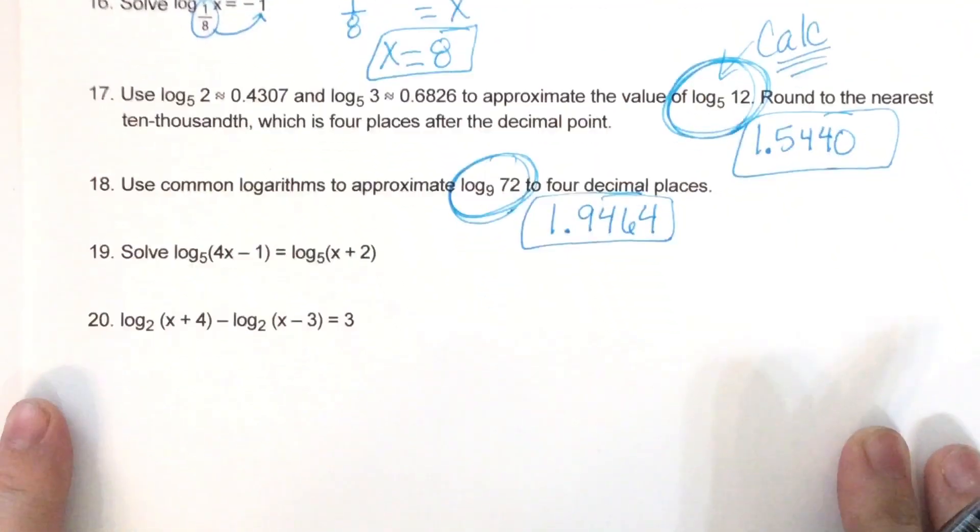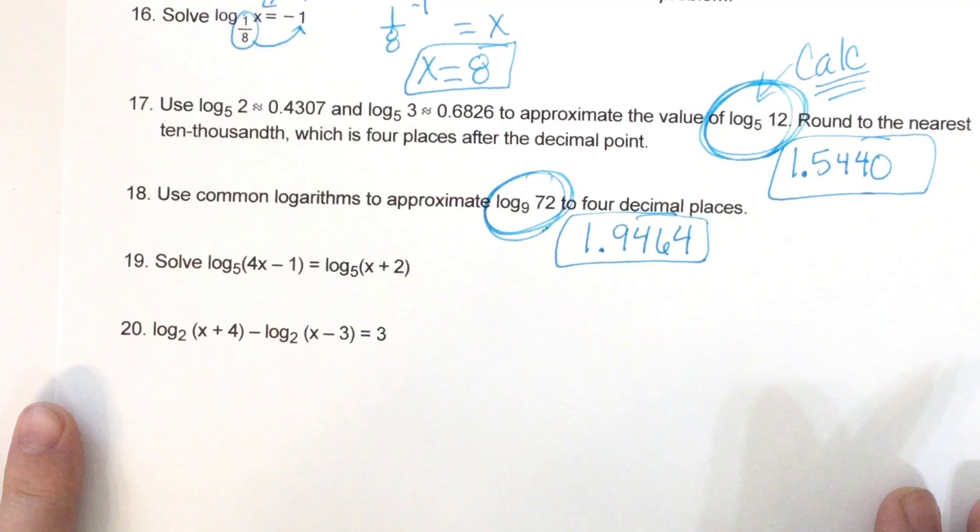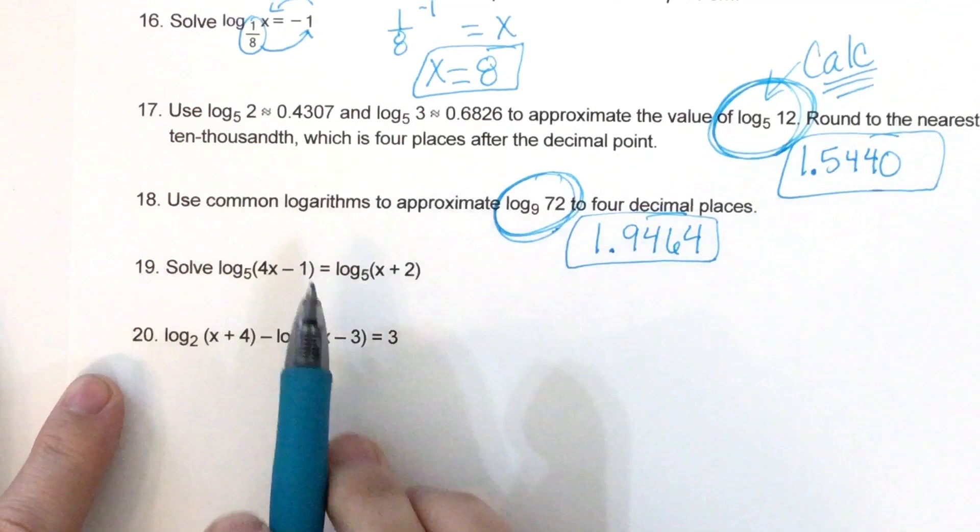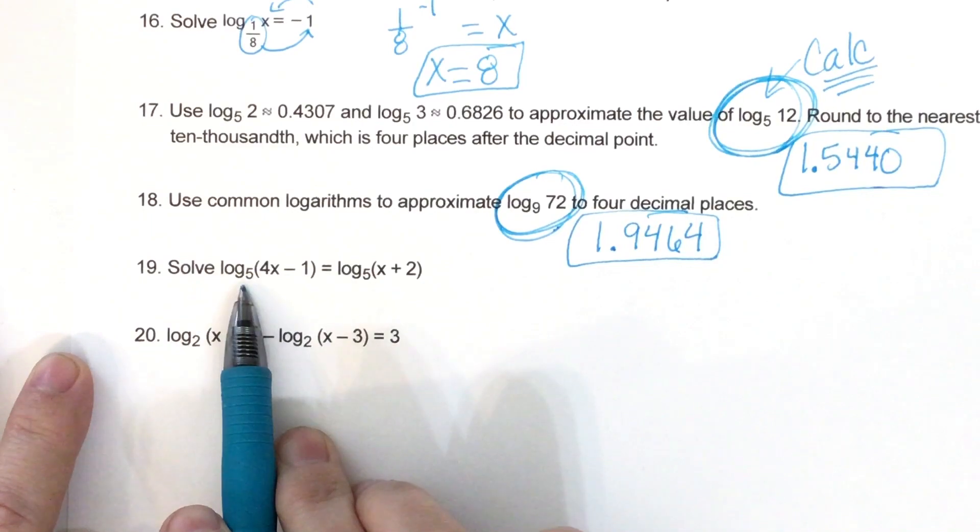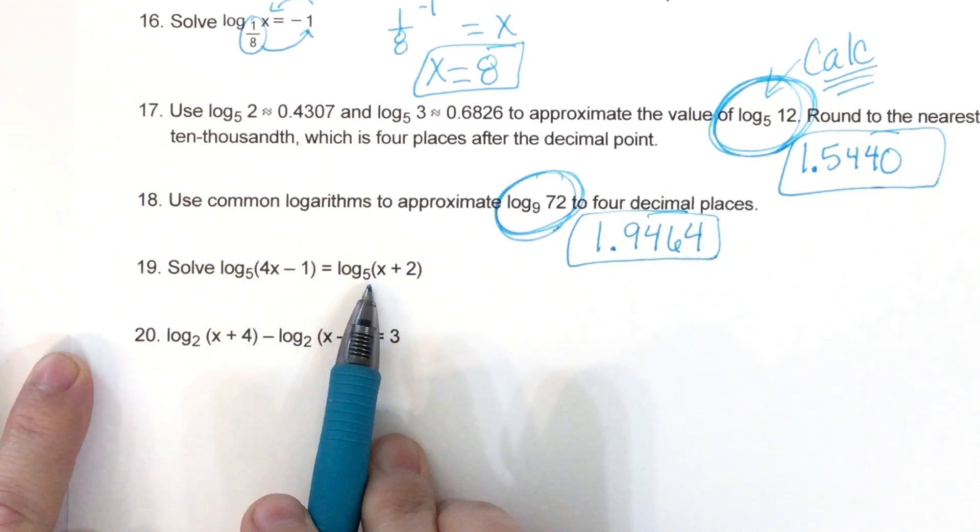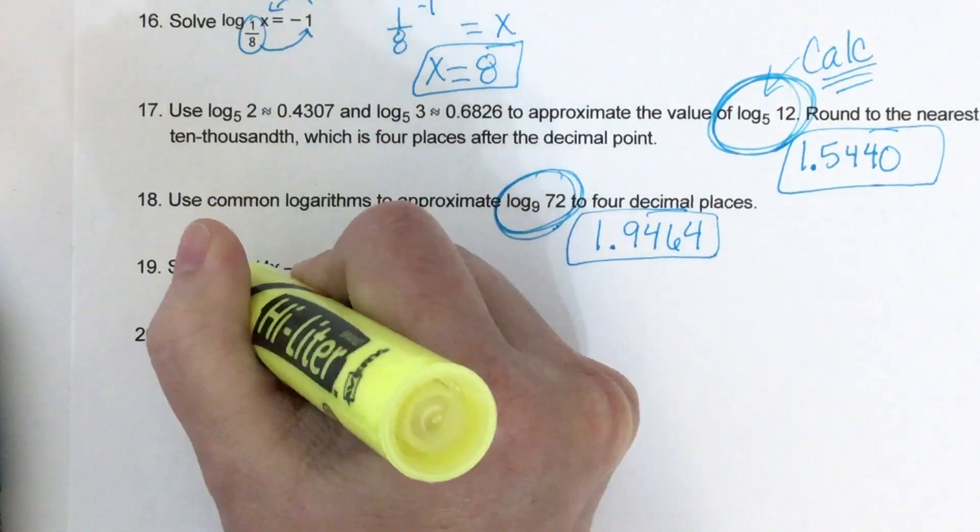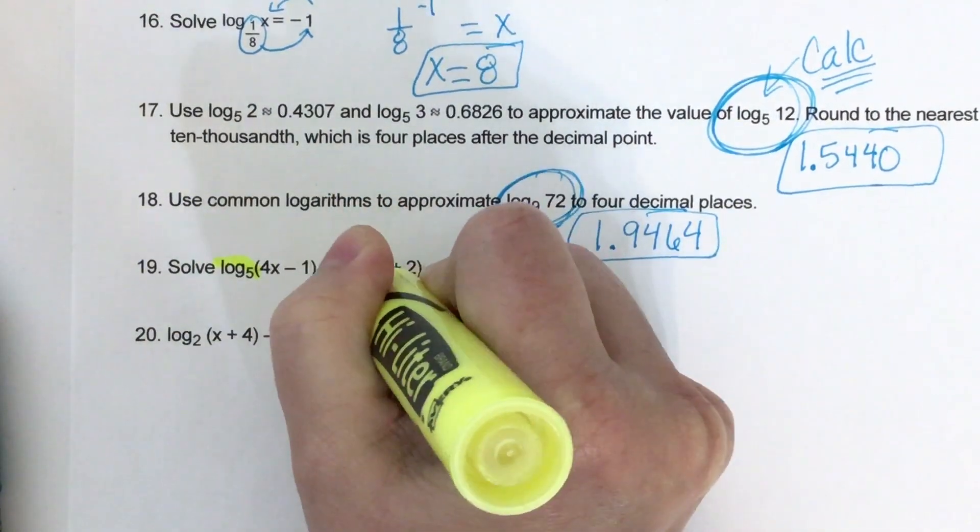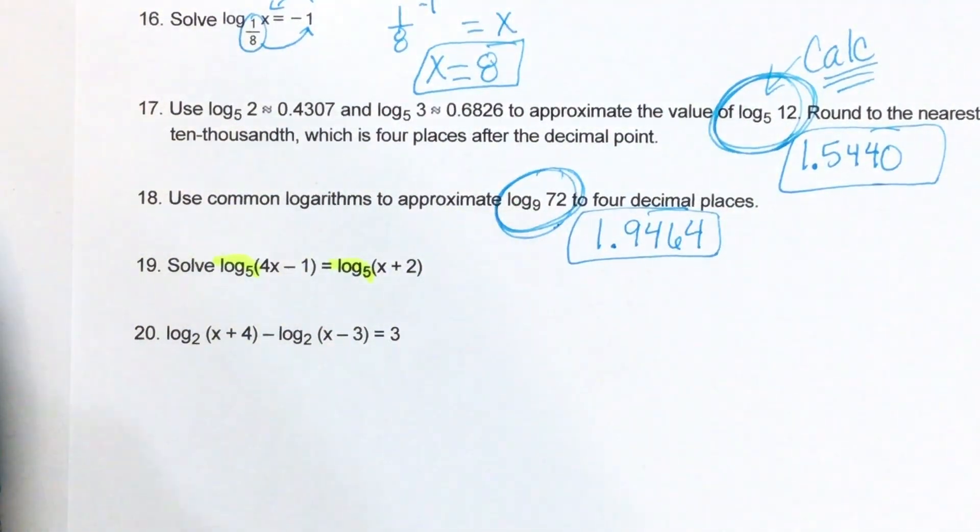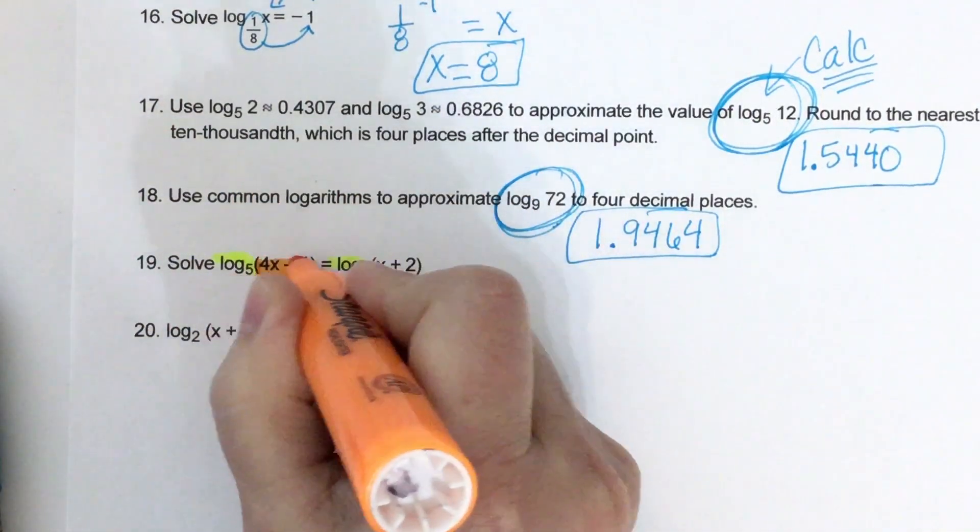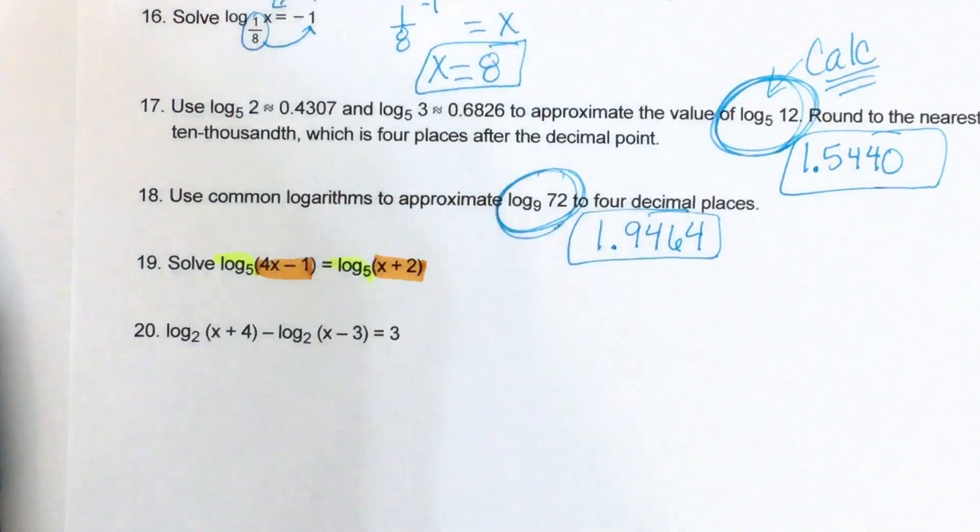Okay, and then the last two we're solving. Okay, so number 19, I see log base 5 on the left and log base 5 on the right. So since they both have the same base, then that means these two expressions will equal each other. 4x minus 1 will equal x plus 2. So that's the equation we have to set up.